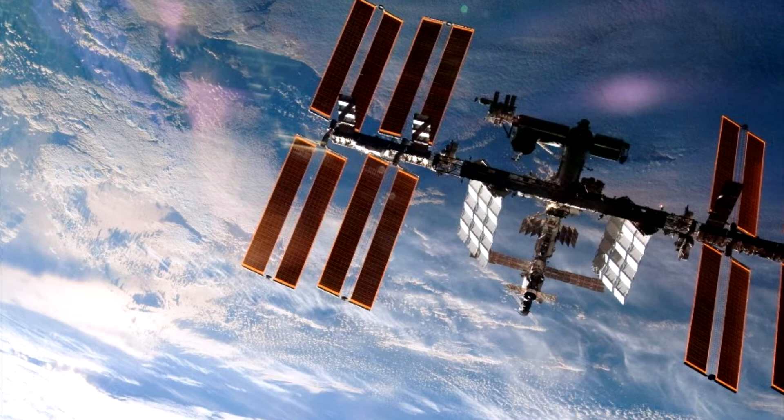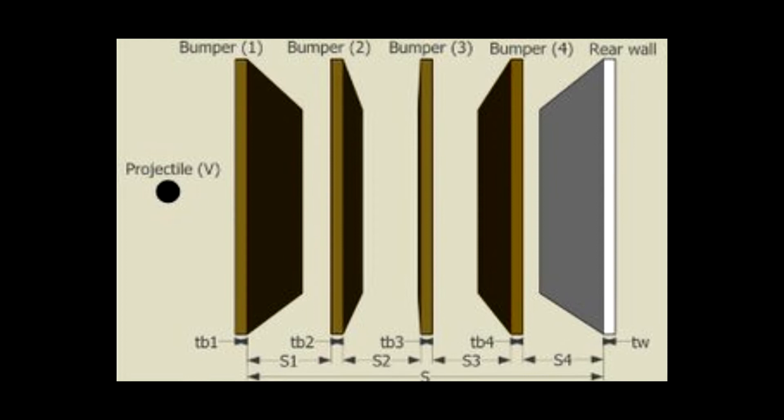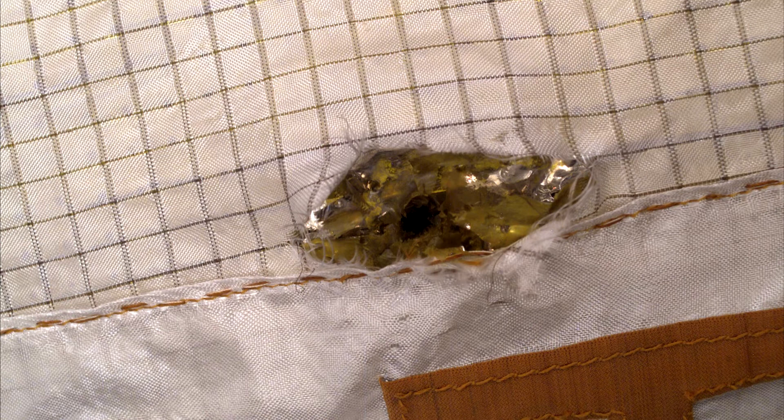Locations on the ISS subject to the most impacts are surrounded by stuffed Whipple. The multiple shock shields consist of several evenly spaced layers of Nextel throughout the standoff, and are used to protect pressurized modules, as they are the most catastrophic in the case of damage.